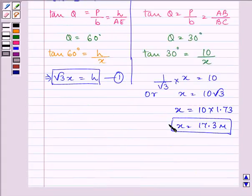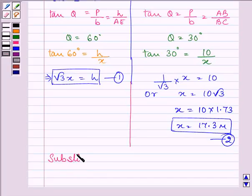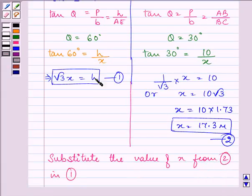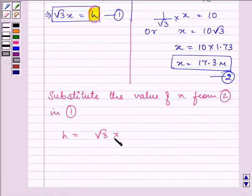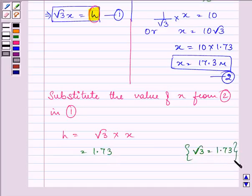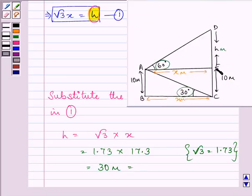We can substitute the value of X from the second in the first equation to find out the distance of H. We have H is equal to root 3 into X, that is 1.73 times 17.3. Here we have its value as 30 meters approximately, that is further equal to H we have taken as DE.